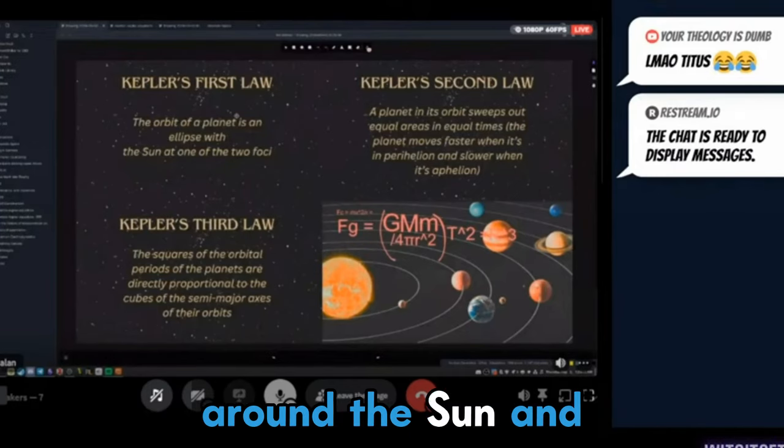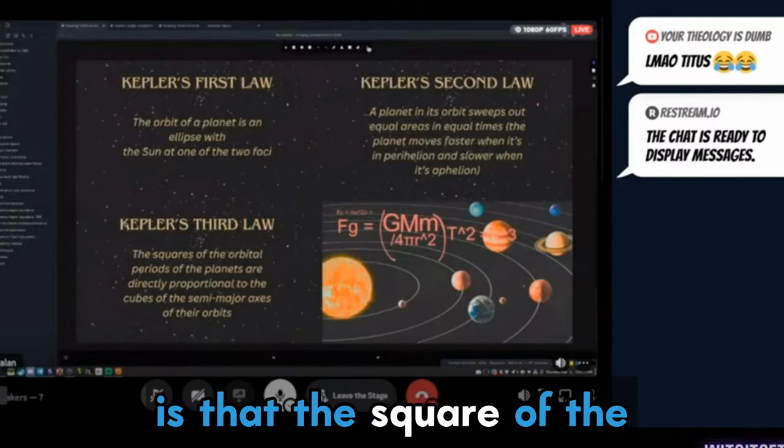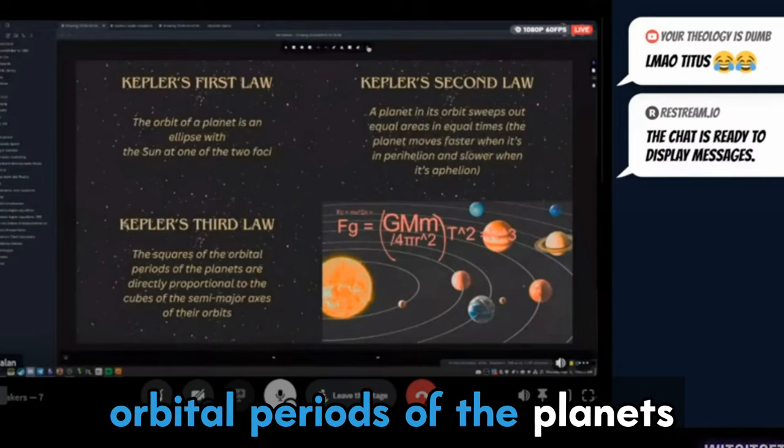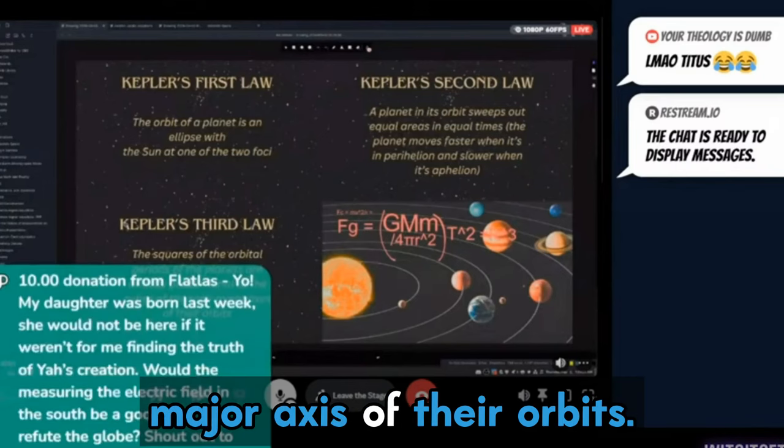When they're coming around the sun and moving back towards it. And then Kepler's third law is that the square of the orbital periods of the planets is directly proportional to the cube of the semi-major axis of their orbits.